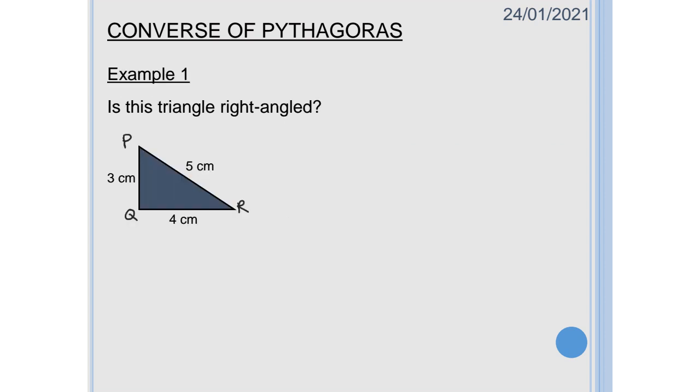So let's have a look at it and see if we can get the basic idea down. We have example one and it's asking is the triangle right angled? So we've got a triangle PQR and we've been given lengths of it, we don't have to find any dimensions, we just have to prove if the triangle is right angled or not.